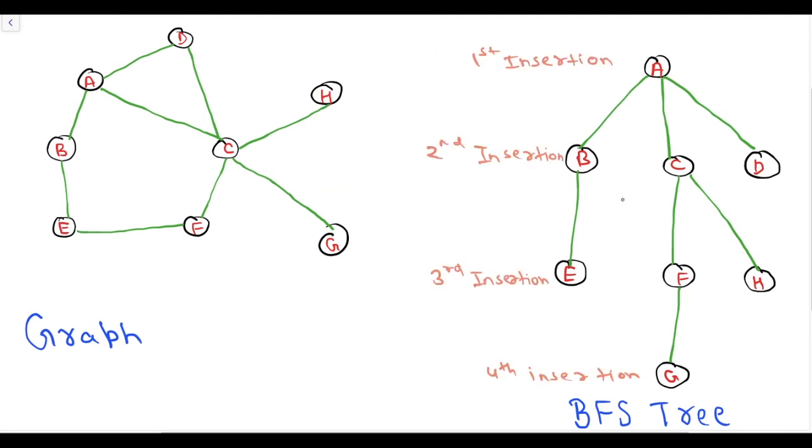This is the BFS tree of this graph. If we start our BFS from A, the A will first be inserted in a queue and then BCD will be inserted in a queue and A will be popped out. After that EFG will be inserted in a queue and BCD will be popped out, and then G will be inserted in a queue and then EFH is popped out.